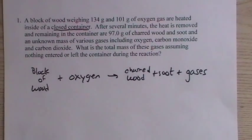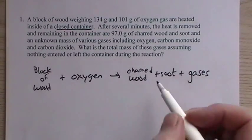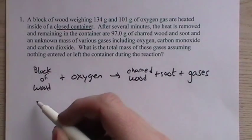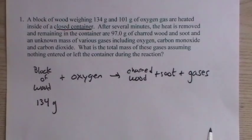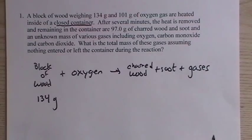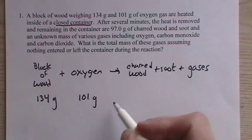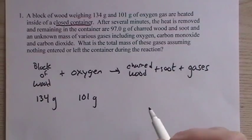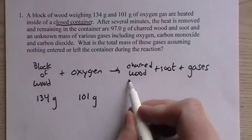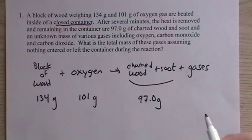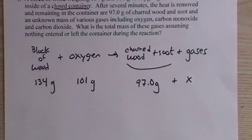Now, the law of conservation of mass says that the reactants, the mass of the reactants must equal the mass of the products. So let's write down everything that we have here. They have given us that the block of wood weighed 134 grams. We reacted with oxygen, 101. So since it's charred wood, obviously we didn't go to completion. We just kind of burned it up a little bit. And the charred wood and soot together are 97 grams. And then the gases are an unknown. So we just write it as x.